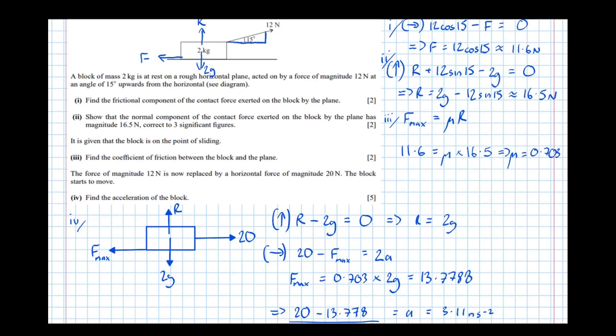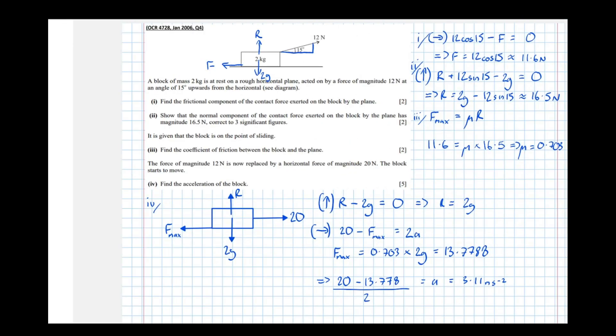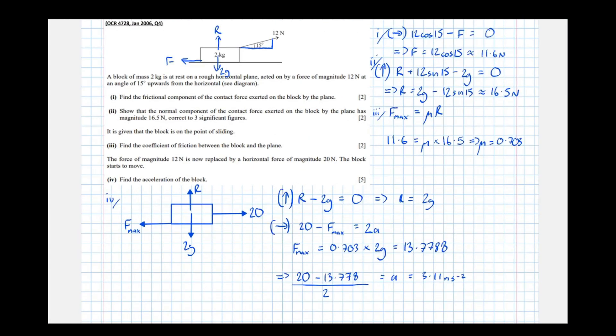So let's go back and indicate what all of our answers are now. Put boxes around them. Make the examiner aware that that's our final answer. So 11.6 Newtons to part 1, 16.5 Newtons to part 2, 0.703, and the coefficient of friction is a unitless constant, so there's no units needed there, and finally 3.11 meters per second squared.